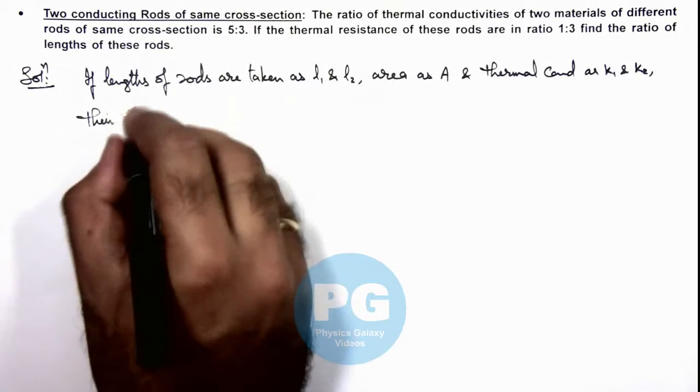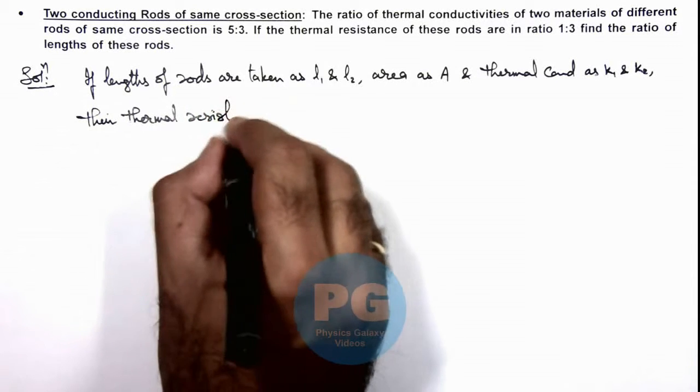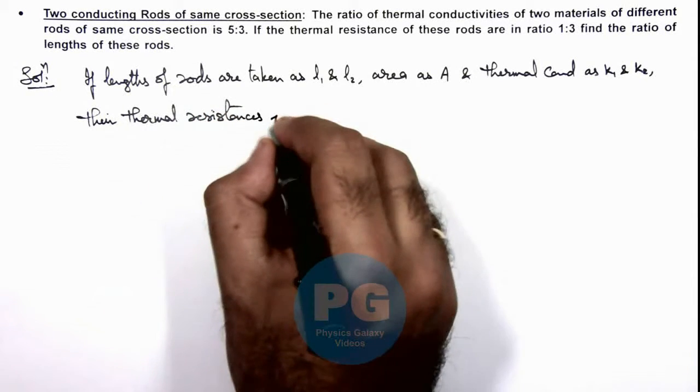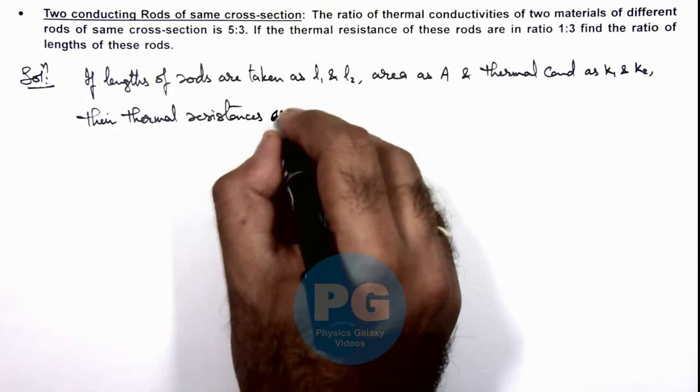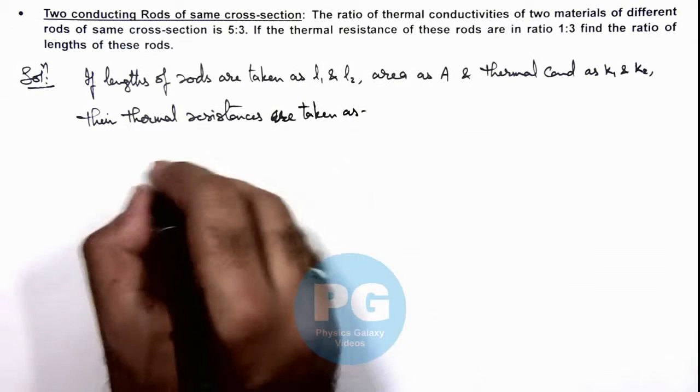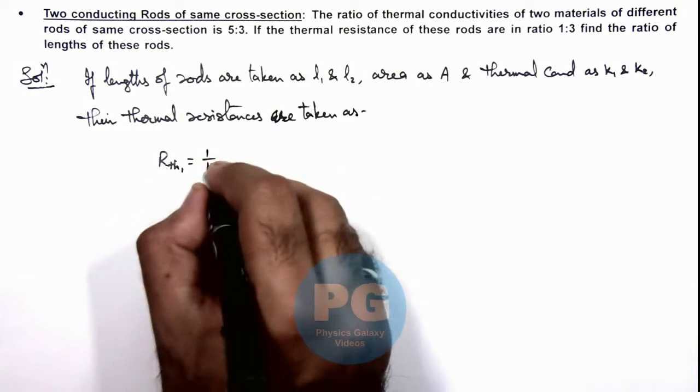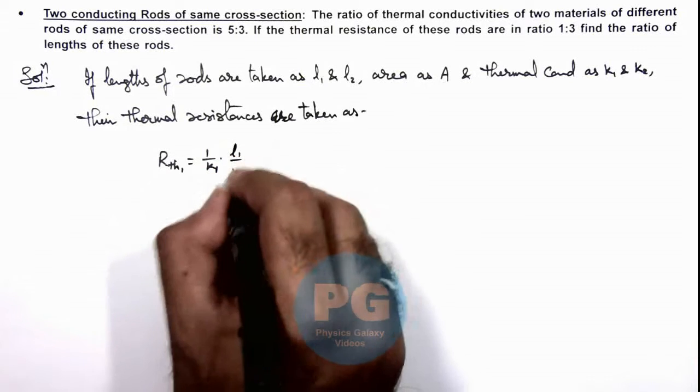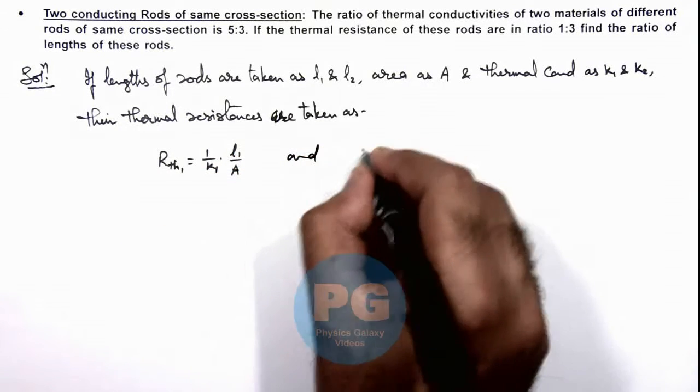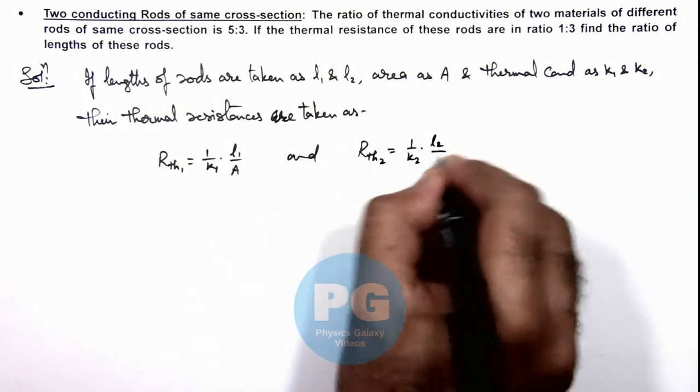Their thermal resistances are taken as: R_thermal1 = (1/k₁) × (l₁/A) and R_thermal2 = (1/k₂) × (l₂/A).